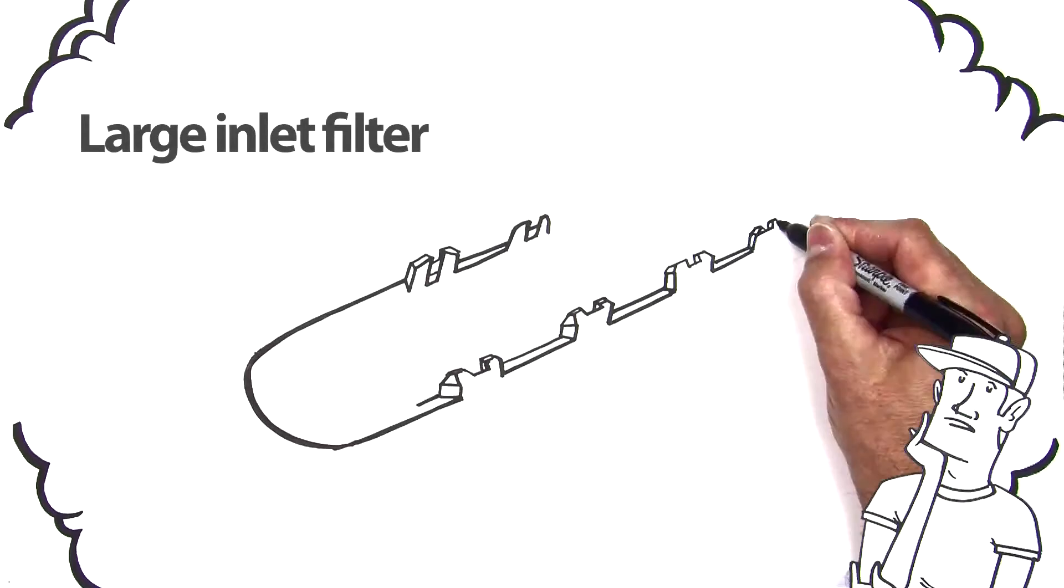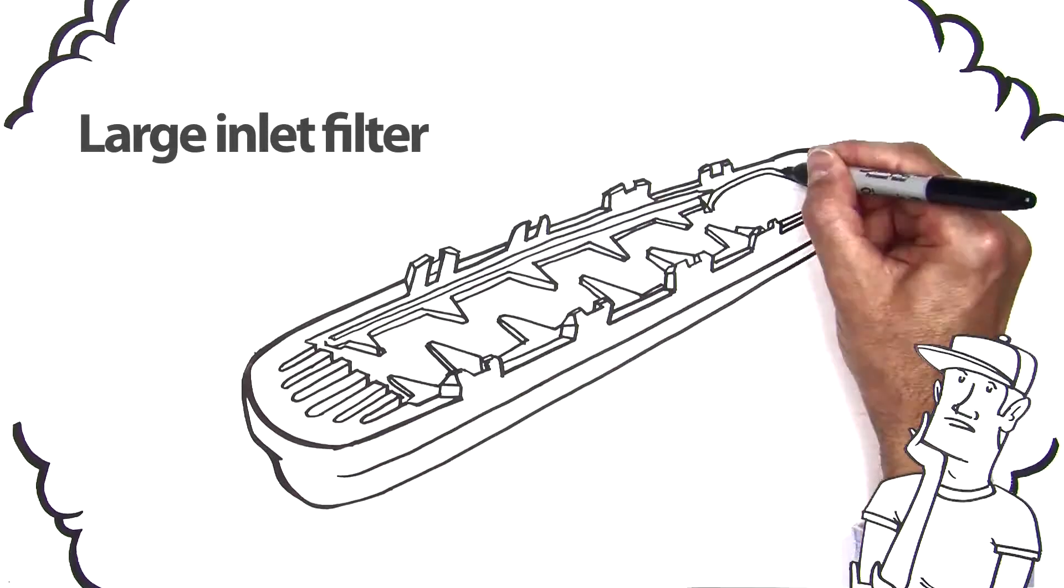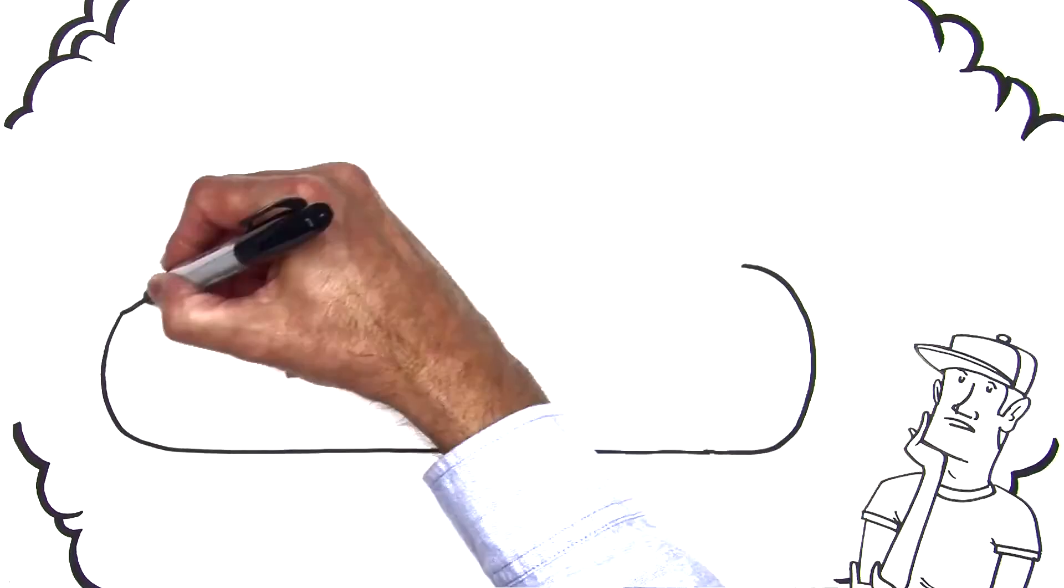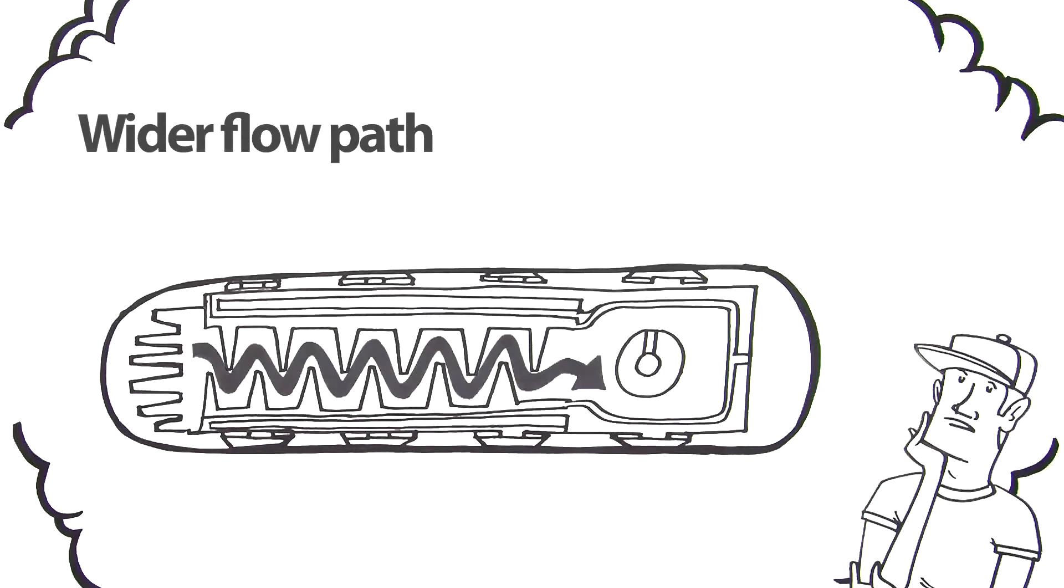Next, you'd make a filter with larger inlet holes that let grit pass through instead of clogging. You'd put in a wider flow path so dirt and grit go right by without plugging the emitter on the inside.